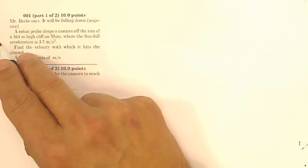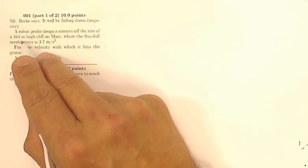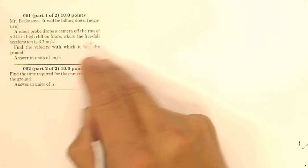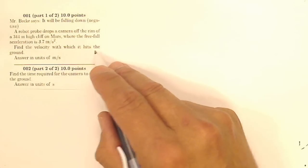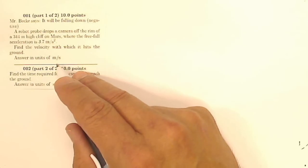This is Mr. Beck Does Your Homework. This is AP Physics, Homework 2.4 on free fall. This is question number one. It says, a robot probe drops a camera off the rim of a 344 meter high cliff on Mars, where the free fall acceleration is 3.7 meters per second squared. Find the velocity with which it hits the ground, answering units of meters per second.